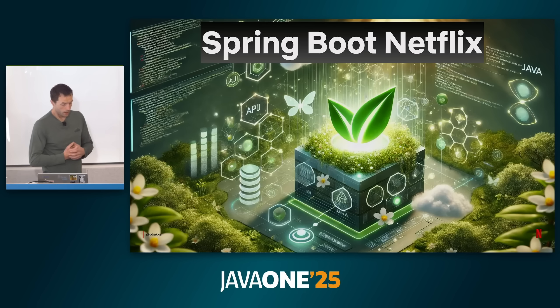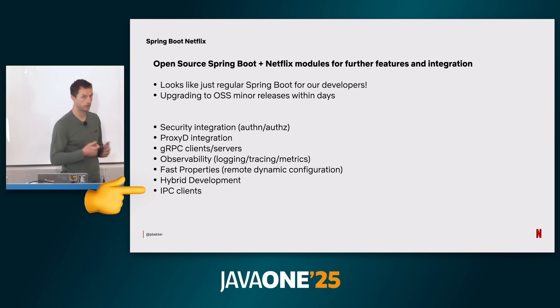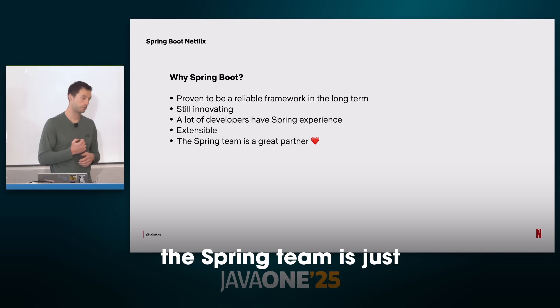It's interesting how many issues Netflix faces — they're probably the biggest proponent of Java, using it at a scale larger than most if not all others. If Netflix is having trouble with something, other people probably are too, so Java gets on it fast. All of Netflix's Java runs on a custom Spring Boot stack — regular Spring Boot plus Netflix-specific modules: security, observability, service mesh integration, gRPC support, and fast properties (runtime config changes without restarts). When Spring Boot releases a new minor version, Netflix upgrades everything within days.